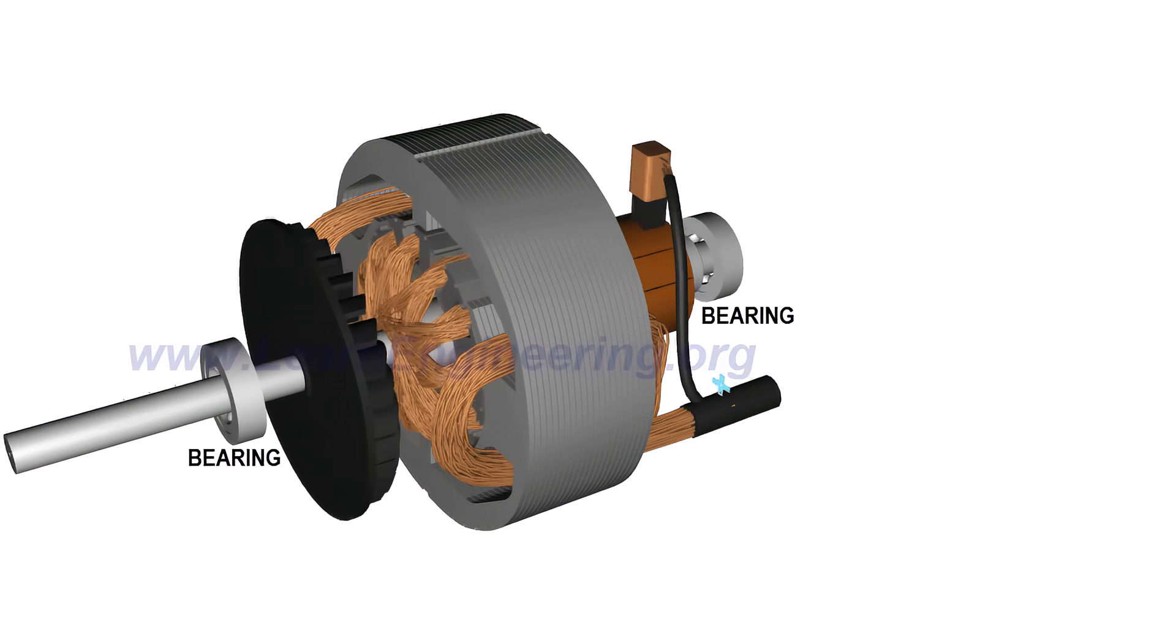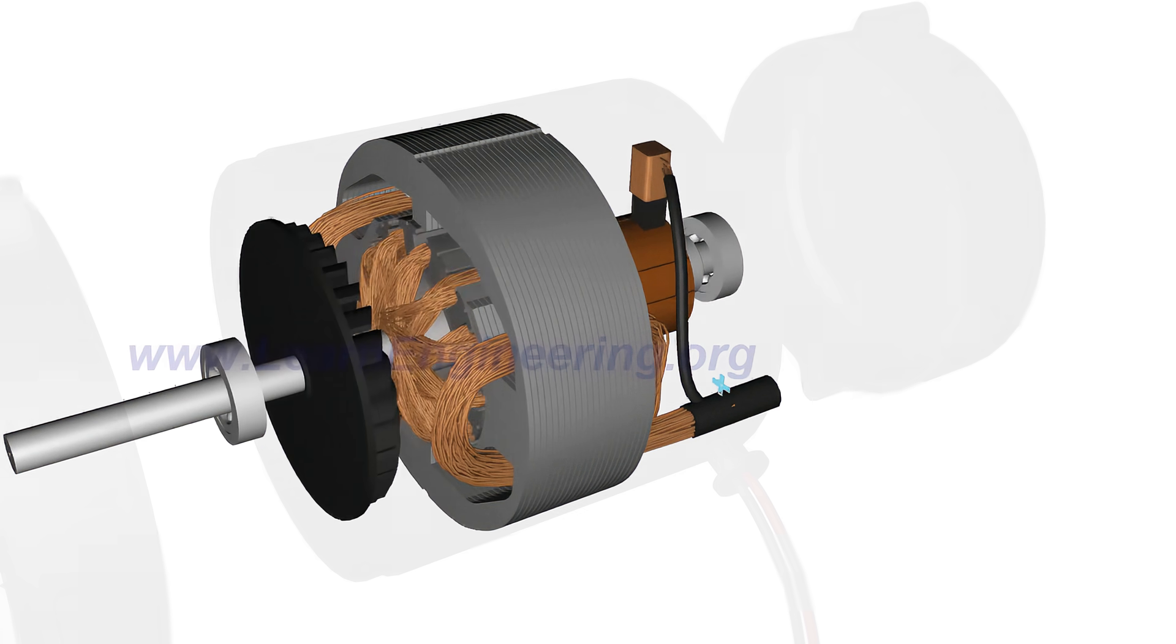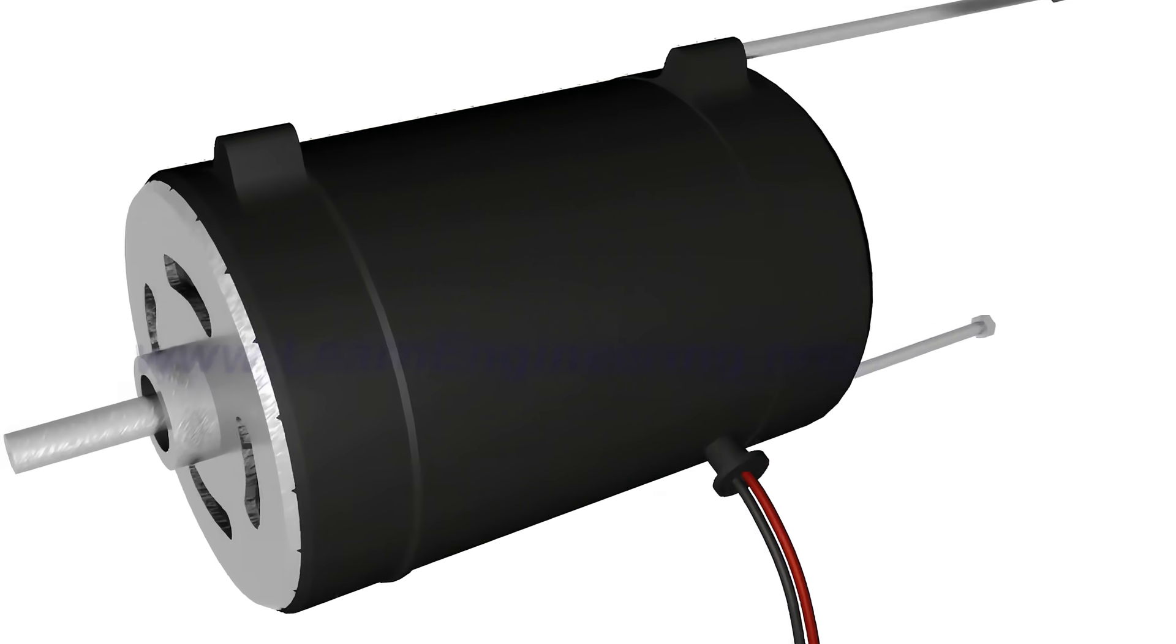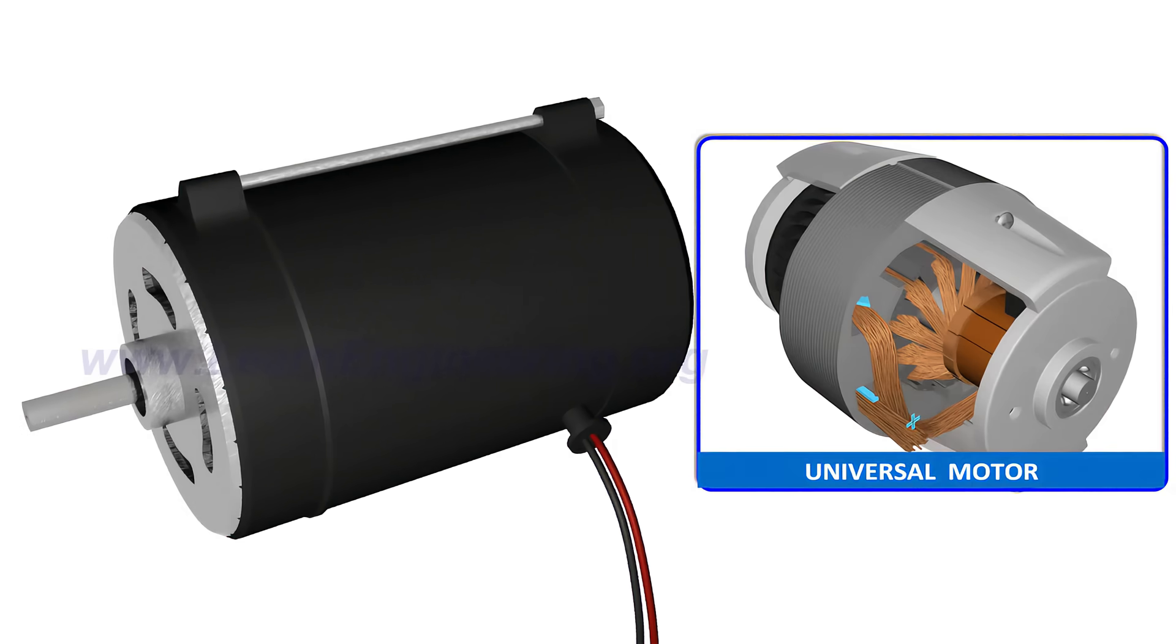One of the interesting variations of the DC motor is a universal motor, which is capable of running under both AC and DC power sources. To know more about it, please check the next video. Thank you.